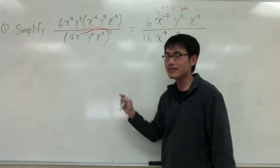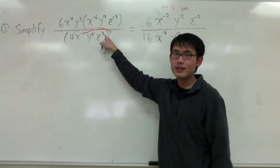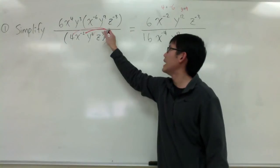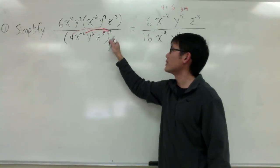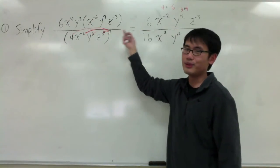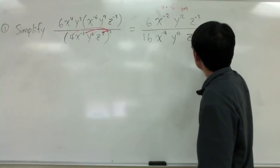And the last part, z to the third power, to the second power. I just need to multiply the exponents once I get. 3 times 2, which is 6. Just like that.